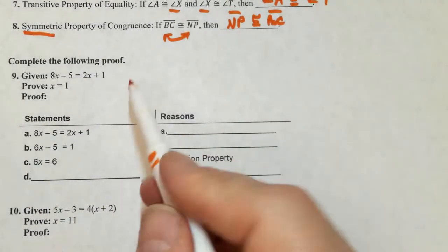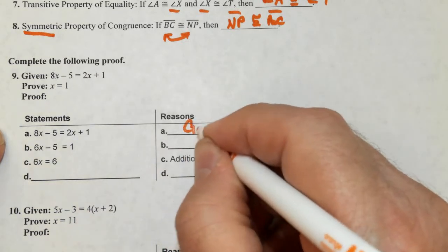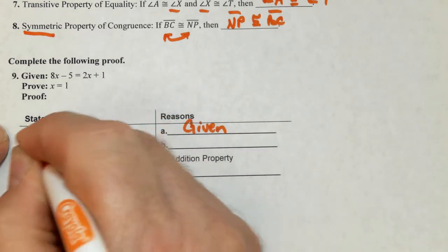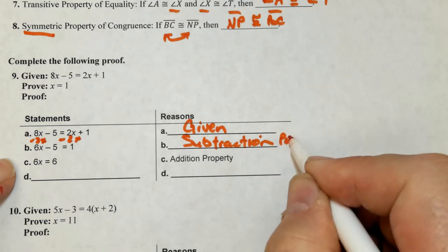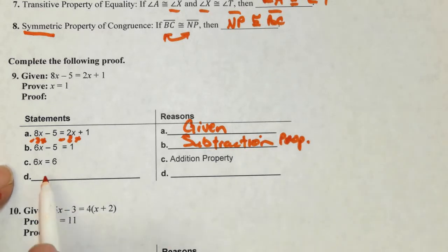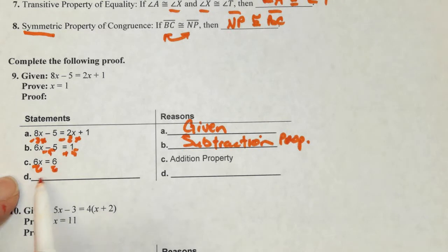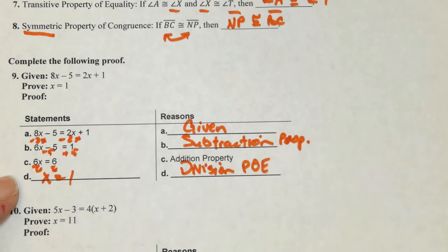Let's do a proof, our first proof, number nine. Given this, prove that x equals 1. So here's our statement. This is what we started with. This reason is given. So now what happened here? Well they subtracted 2x, so this is subtraction property of equality or subtraction POE. This is addition property. They added 5 to both sides. And now what was the last step here? Well they divide by 6. So we get x equals 1, and that's by division property of equality.